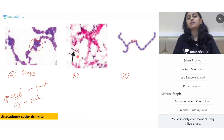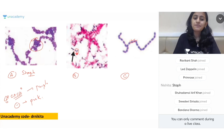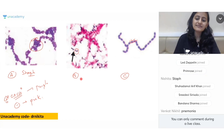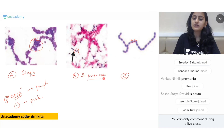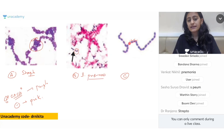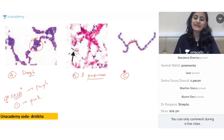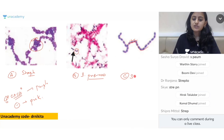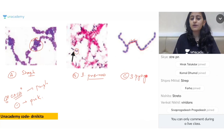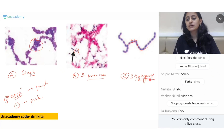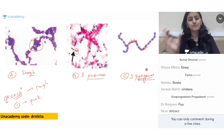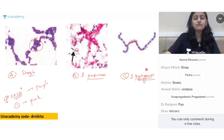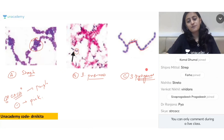In image B you see gram-positive diplococci with a lanceolate shape — that is your Streptococcus pneumoniae. In image C you see gram-positive cocci in chains — this is your Streptococcus pyogenes. The most important organisms to know are Staph, Streptococcus pneumoniae, and Streptococcus pyogenes.